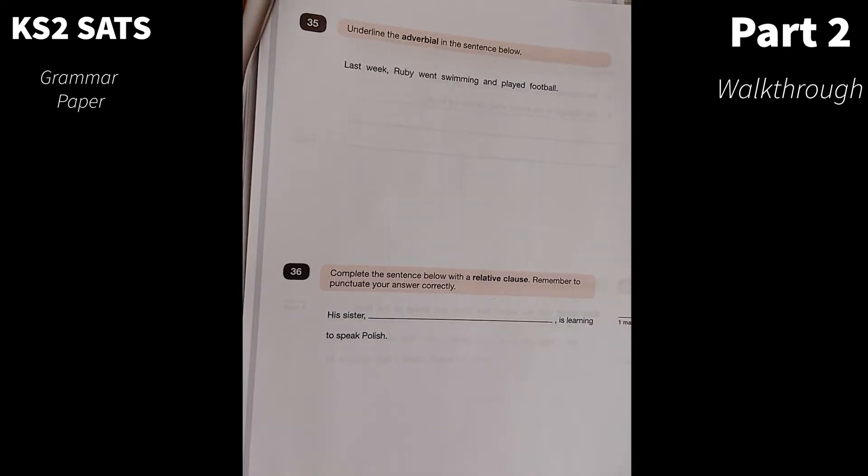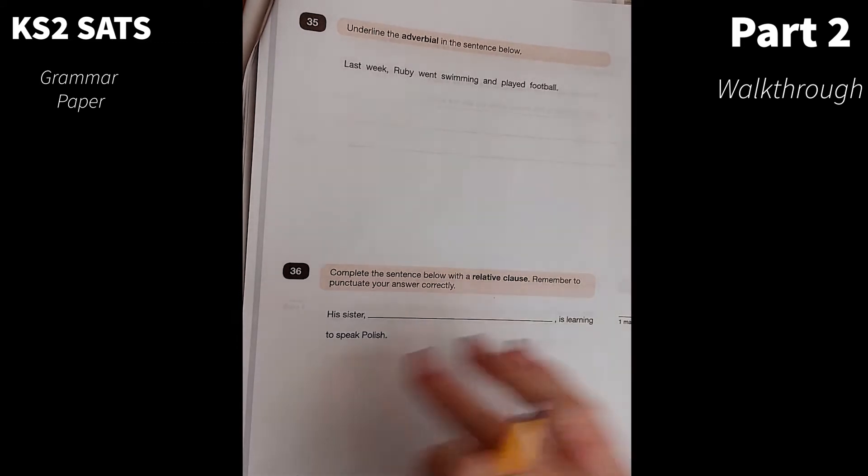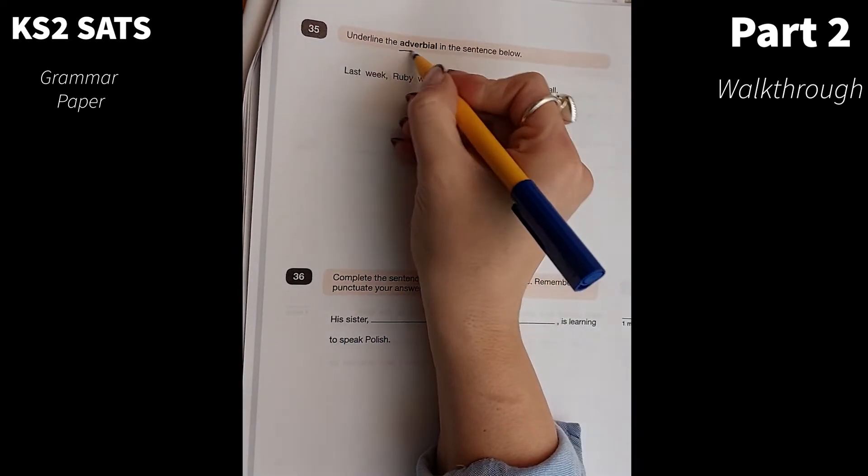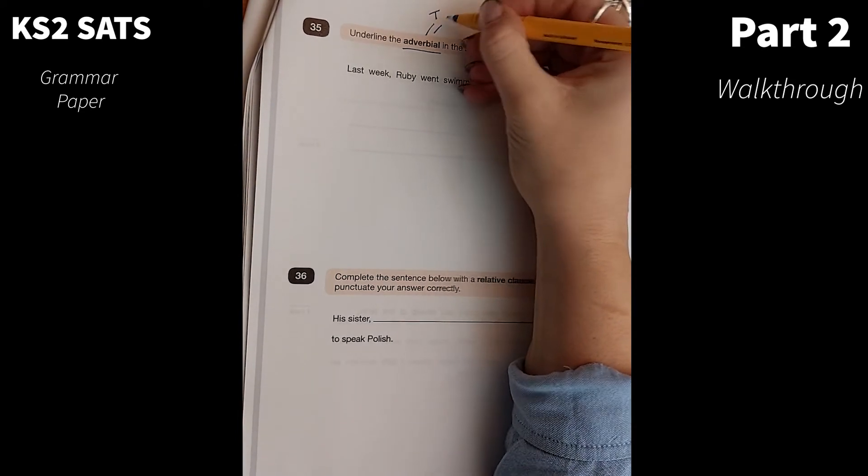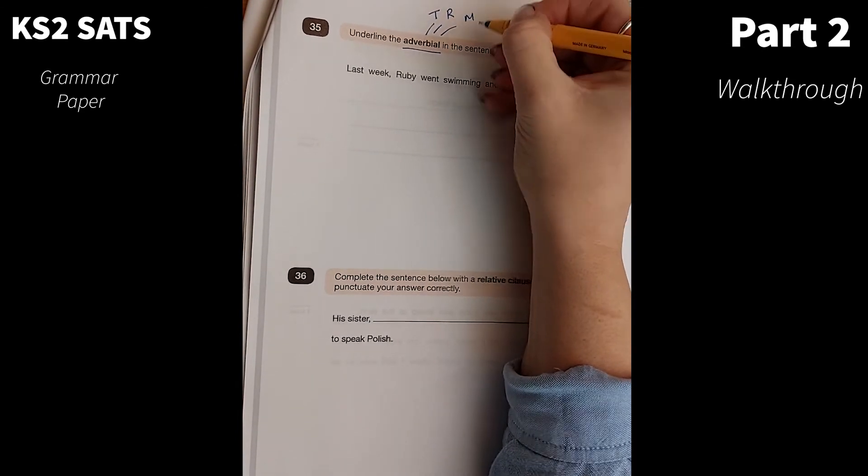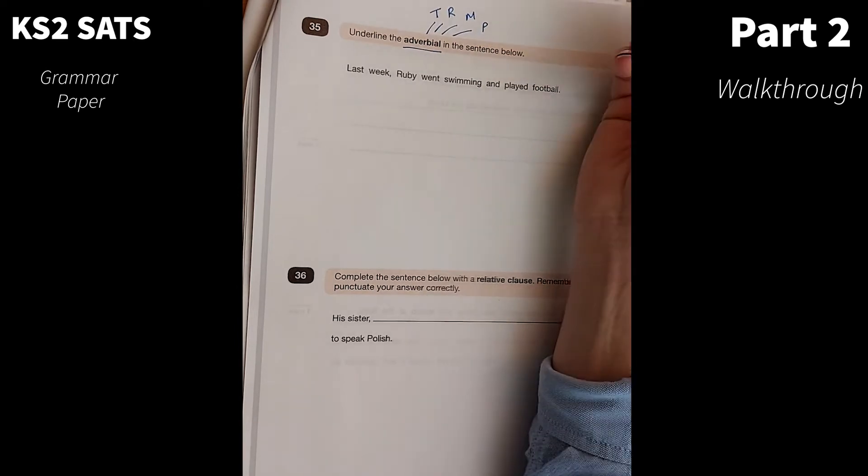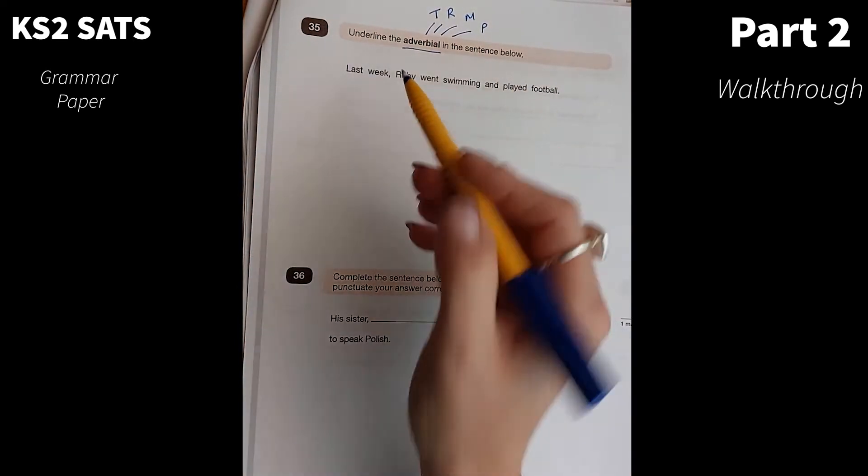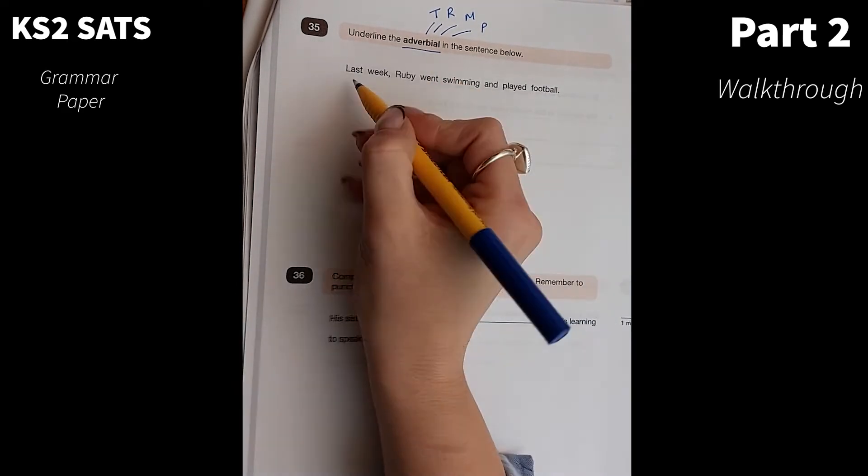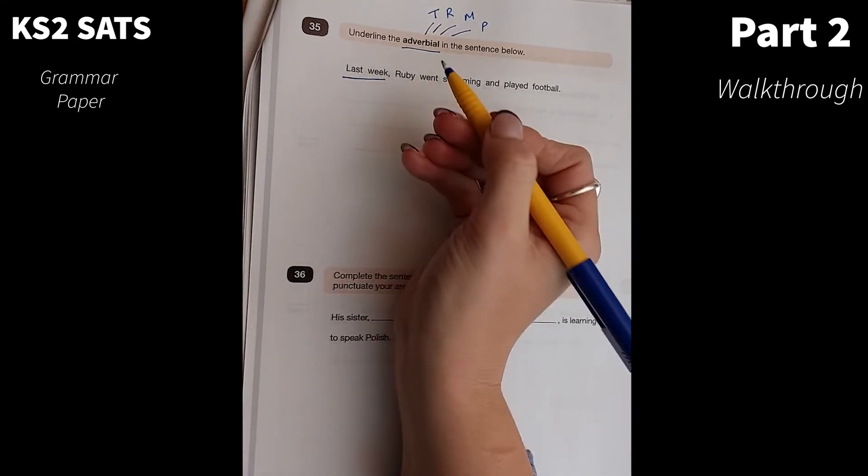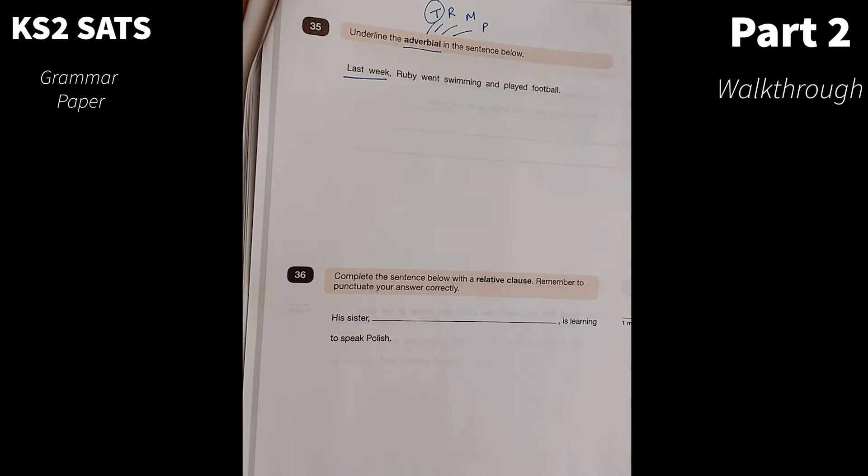Number 35. Underline the adverbial in the sentence below. Here we have our adverbial. Our adverbials give us time, reason, manner, and place. You can remember that as TRAMP. So I'm looking for my sentence. Last week, Ruby went swimming and played football. Well, my adverbial is last week. And that is an adverbial of T for time.